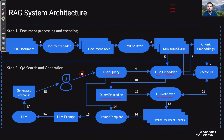The vector database figures out which document chunk embeddings are similar to the question. Each document chunk has a corresponding embedding. Our new question goes through the same LLM embedder and we get an embedding for this question. This embedding is sent to the vector database through the retriever, which identifies which chunk embeddings are closest to the query embedding. It returns a response identifying the most similar document chunks — for example, document chunks one, three, and four. This is how the DB retriever goes through all chunk embeddings and identifies which document chunks are relevant and could be helpful to answer our question.